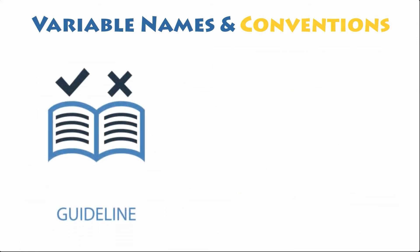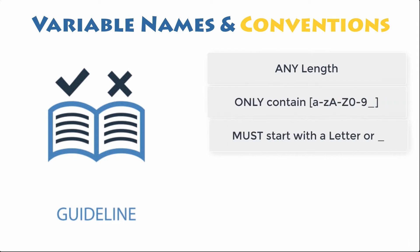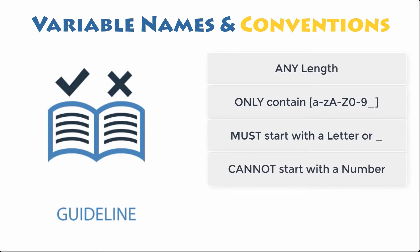Officially, variable names in Python can be any length and can consist of uppercase and lowercase letters, digits, and the underscore character. An additional restriction is that although a variable name can contain digits, the first character of a variable name cannot be one.